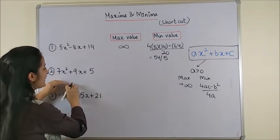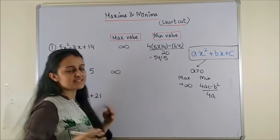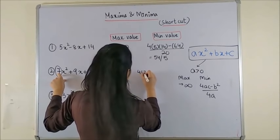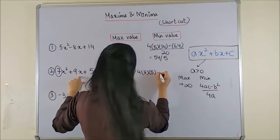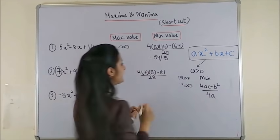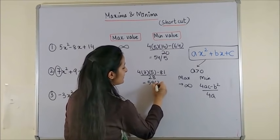So was the case in the second example. 7 being greater than 0, maximum value was simply infinity. And for minimum, we again did 4AC minus B square upon 4A, that is 28. And on simplifying everything, we got 59 by 28.